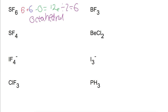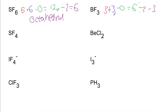For boron trifluoride, boron has three electrons. We add three atoms and there is no charge, giving six electrons in total. Dividing by two gives three electron pairs with no lone pairs, so this one is trigonal planar.